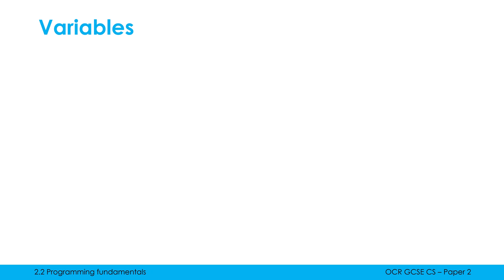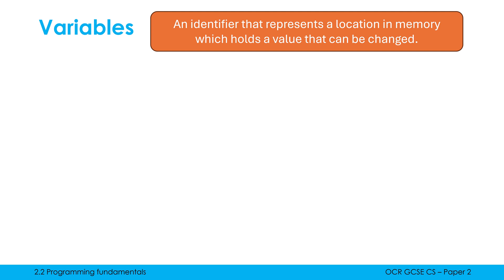So variables: first of all, what is a variable? A really important concept in programming. My best definition is it's an identifier that represents a location in memory which holds a value that can be changed. The word identifier is a word you have to be familiar with - the identifier of a variable is its name. An identifier is anything a programmer has decided to call something in code.